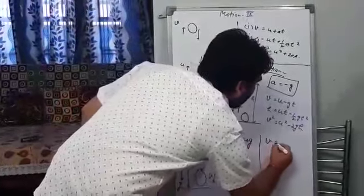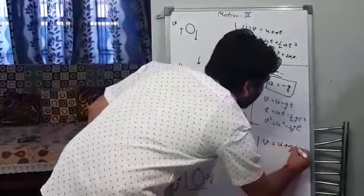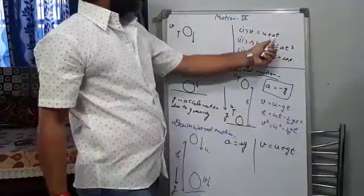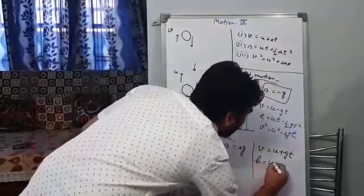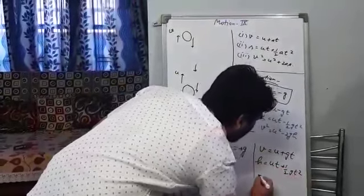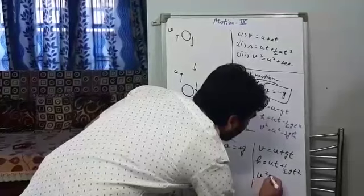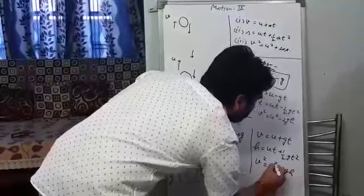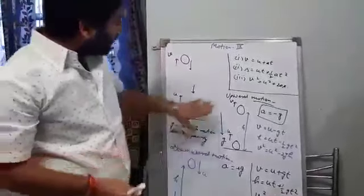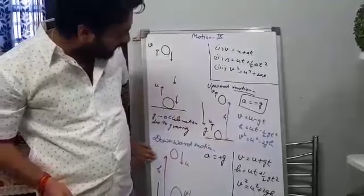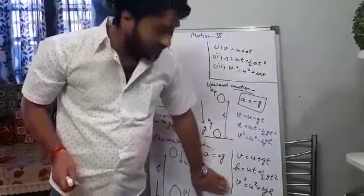So now the equations will become: first equation V equals to U plus GT, because acceleration is plus G. Second equation: H equals to UT plus half GT squared. And the third equation: V squared equals to U squared plus 2GH. So whenever the motion is vertically upward, I will use the upward equations. Whenever the motion will be vertically downward, I will use these three equations.